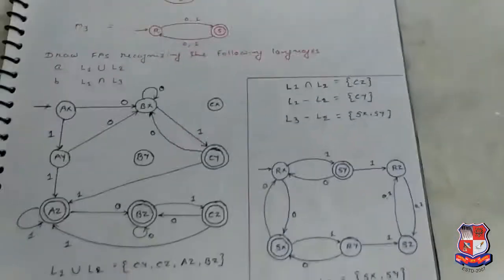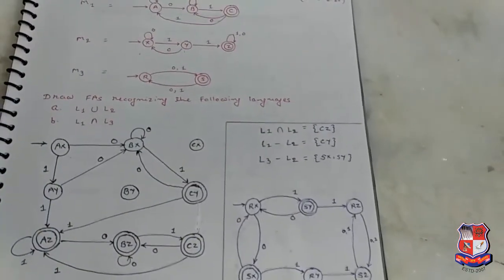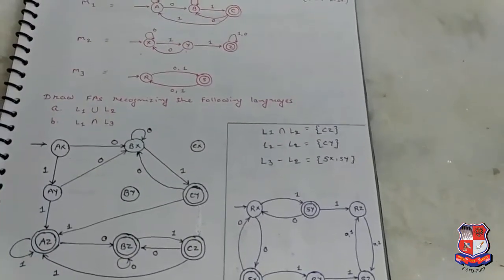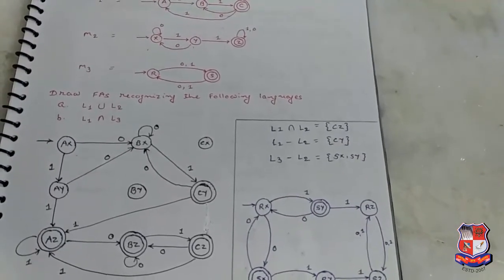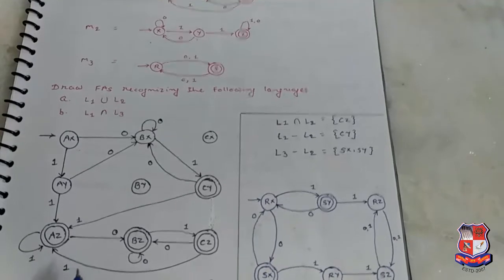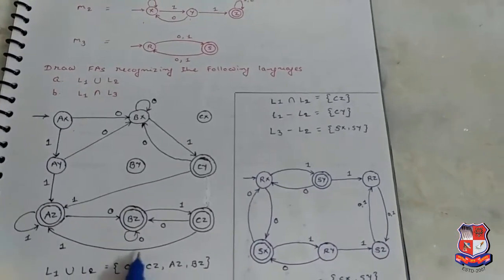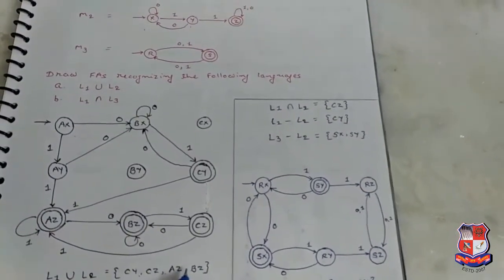For L1 union L2, all the possible states with either C or Z become the final state. So C Y, C Z, A Z, and B Z are final states.